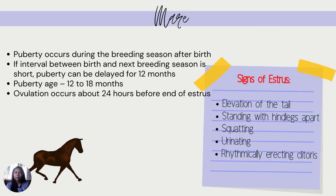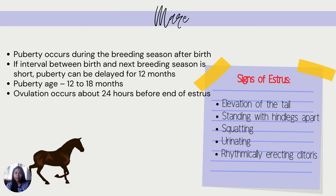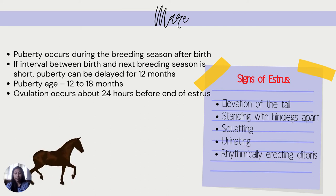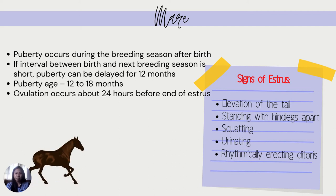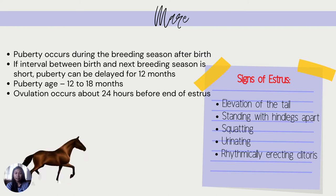For mares, puberty occurs during the breeding season after birth. If the interval between birth and the next breeding season is short, puberty can be delayed for 12 months. Puberty age is 12 to 18 months. Ovulation occurs about 24 hours before the end of estrus. Signs of estrus for mares are elevation of the tail, standing with hind legs apart, squatting, urinating, and rhythmically erecting the clitoris.